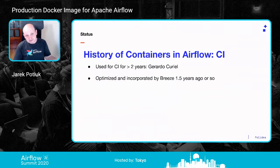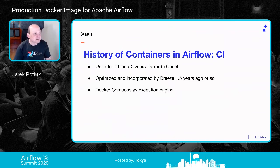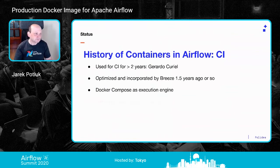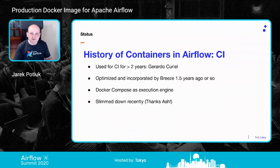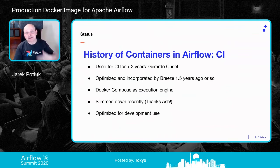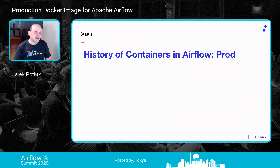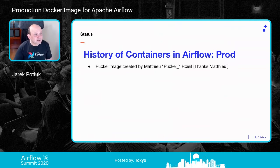I took over, optimized, and incorporated the Breeze development environment about a year and a half ago. It uses Docker Compose as an execution engine — a simpler version of running several containers and having them talk to each other. It's been slimmed down recently from about two gigs to around 130 megabytes. Thanks to Ash, who relentlessly pushed me to make the image smaller. It's optimized for development use — it rebuilds fast when only source files change.